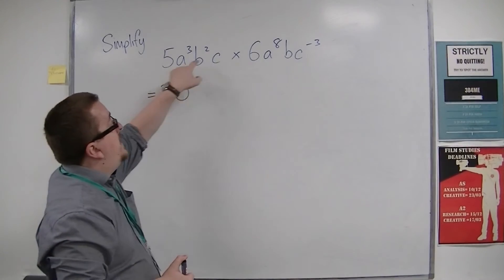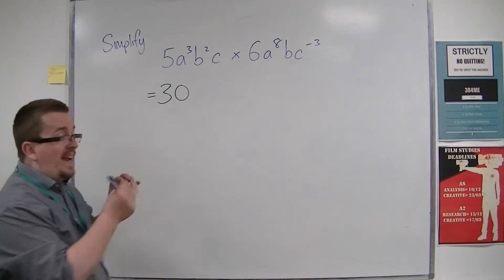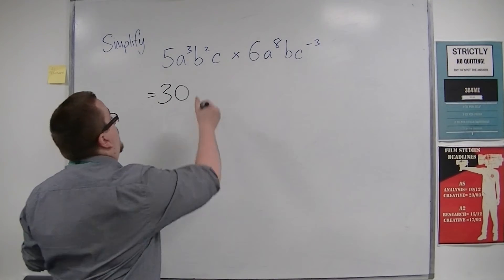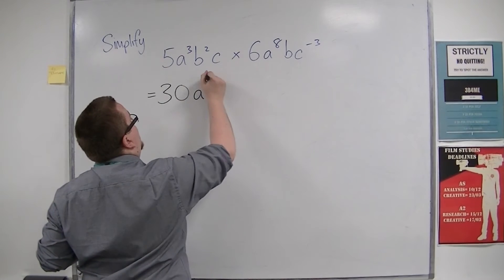Then we have a³ times a⁸. So with the base number the same, we can just add the indices. So that would be a to the power of 3 plus 8, which is 11.